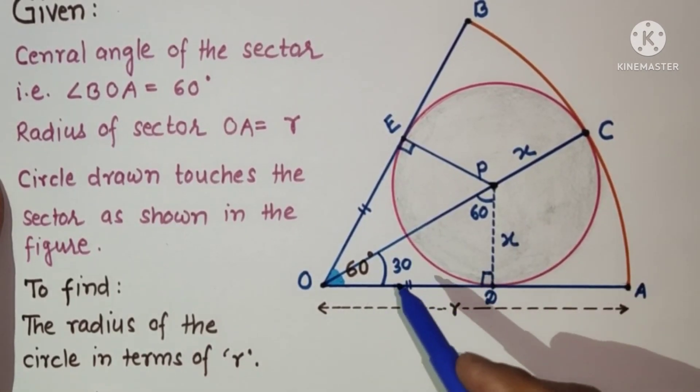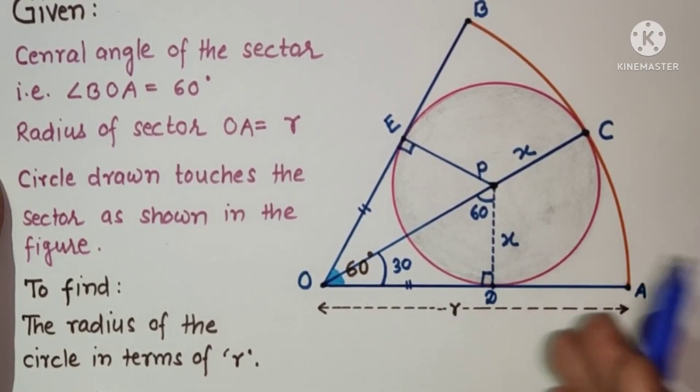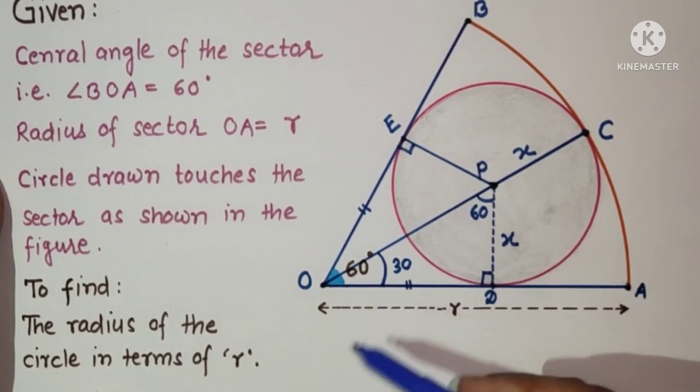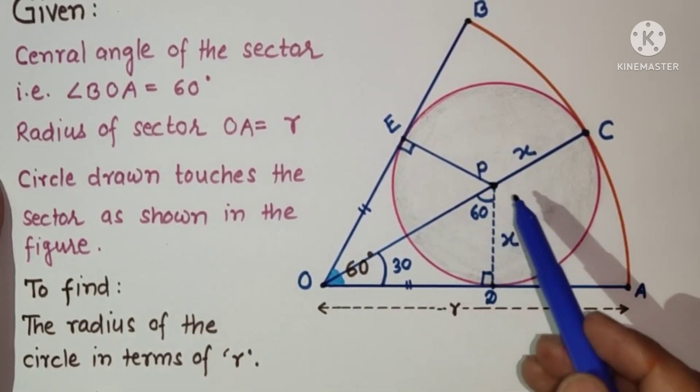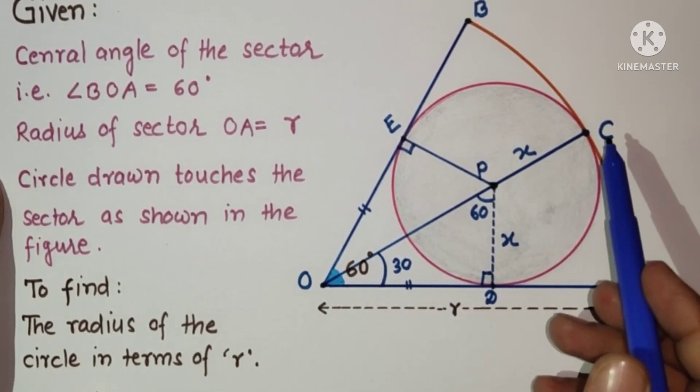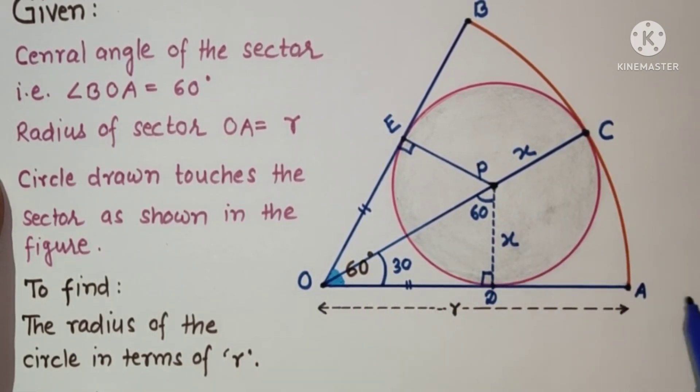According to the 30-60-90 theorem, the hypotenuse is 2 times the side opposite to 30 degrees. This will be 30 degrees, so this will be 2X. OP is 2X, PC is X, so the whole OC is 3X.